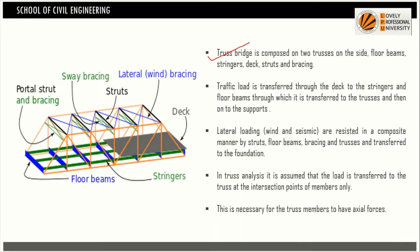A truss bridge is composed of two trusses, one on either side of the bridge, connected by floor beams and stringers — the long longitudinal beams. The deck sits on top, compression members are called struts, and there is portal bracing and lateral bracing. Load is transferred through the deck, then to the stringers, then to the floor beams. Floor beams are connected at the joints only, so in a truss, load is assumed to be transferred only at the intersection points of members.